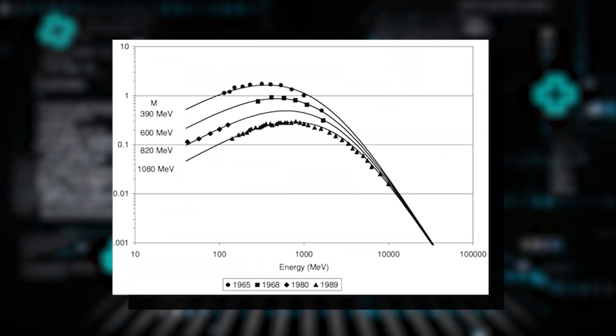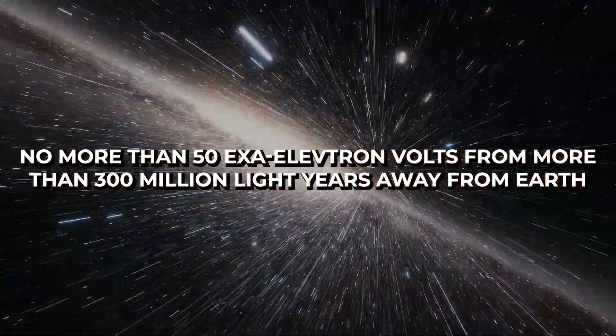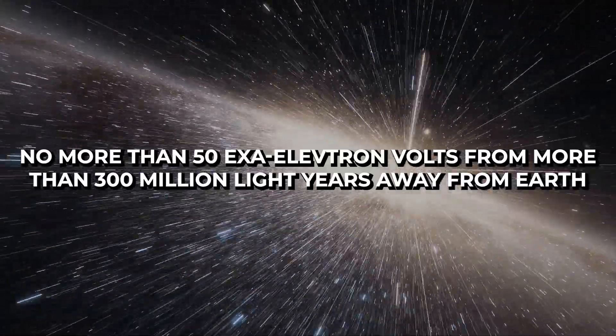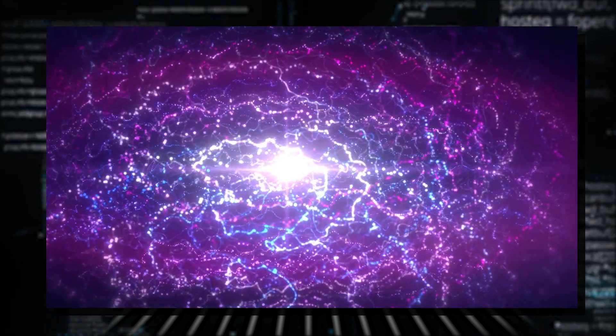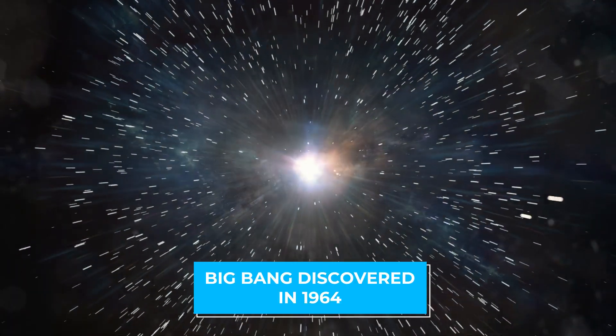In 1965, scientists proposed a theoretical limit on how energetic a cosmic ray should be, no more than 50 exa-electron volts from more than 300 million light-years away from Earth.